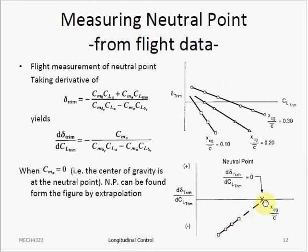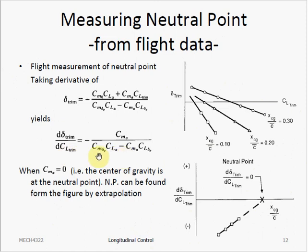The neutral point is where the slope d_delta/dCL equals zero. This can be explained by looking at our trim elevator equation: if we take the derivative of the trim elevator deflection with respect to lift coefficient, we get an equation containing the Cm_alpha term in the numerator. We know that the stick-fixed neutral point is the position of the center of gravity when Cm_alpha equals zero. So by this equation, when Cm_alpha is zero, d_delta/dCL_trim is also zero — that is our neutral point.